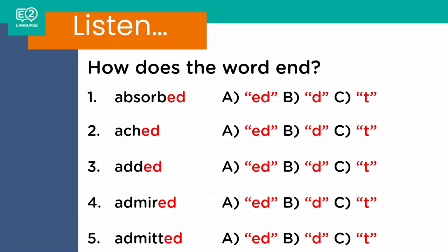Let's look at the answers now. For number one, 'absorbed' — d. Number two, 'eight' — t. For number three, 'added' — ed. For number four, 'admired' — d. And for number five, 'admitted' — ed. Very subtle differences there, but slight as they might be, they're important ones.